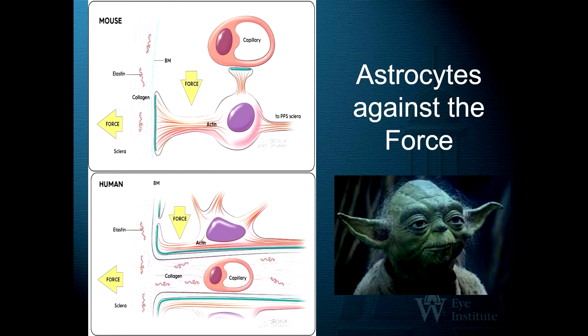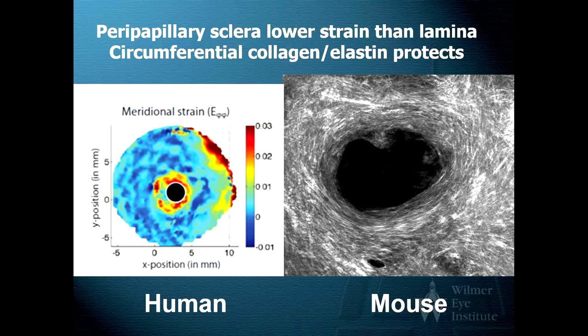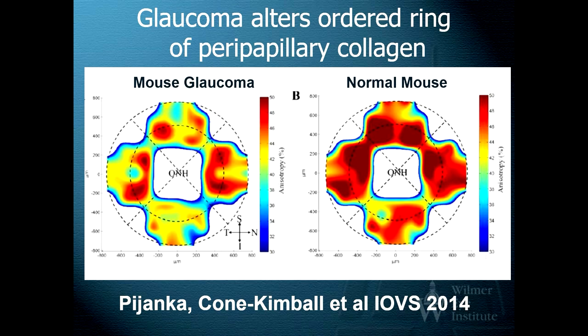The connective tissue in the human eye contains both the response of fibers and cells that we want to study. The cellular response is extraordinarily complex and contains mechanosensitive units — the alpha and beta dimers of integrins — connecting through seven other molecules to the actin-myosin cytoskeleton of the cell. The peripapillary sclera is a ring of both collagen and elastin. When glaucoma is experimentally produced in mouse eyes, there are significant changes in the ordered ring of peripapillary collagen, as well as changes in elastin orientation and configuration in the nerve head.